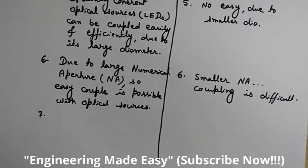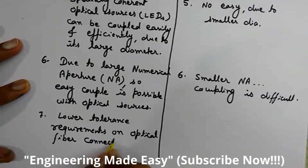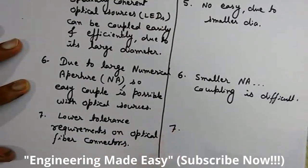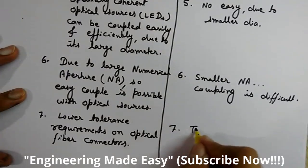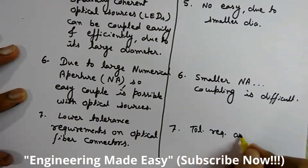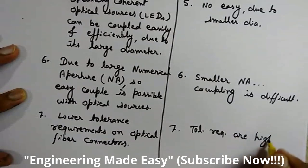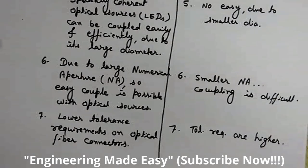The seventh point: multi-mode step index fibers have lower tolerance requirements on optical fiber connectors. In contrast, the tolerance requirements are higher in case of single mode step index fibers.